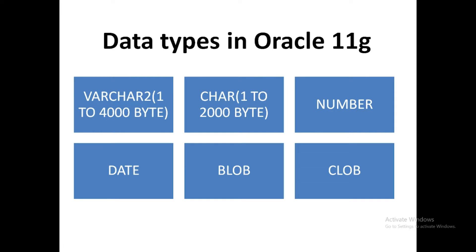Next are the LOB data types — LOB means Large Object. The first one is BLOB and the second is CLOB. In BLOB, you can store large objects in binary form, such as graphics, video, or sound files. In CLOB, which stands for Character Large Object, you can store very large files of character type.